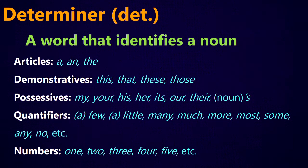We've got basically five kinds of determiners: articles, demonstratives, possessives, quantifiers, and numbers. The articles are a, an, and the — and some books also include the word some. Demonstratives are pointing words like this, that, these, and those. Possessives are words about who the noun belongs to, such as my, your, his, her, its, our, and their. Any noun with an apostrophe S is also a possessive determiner.